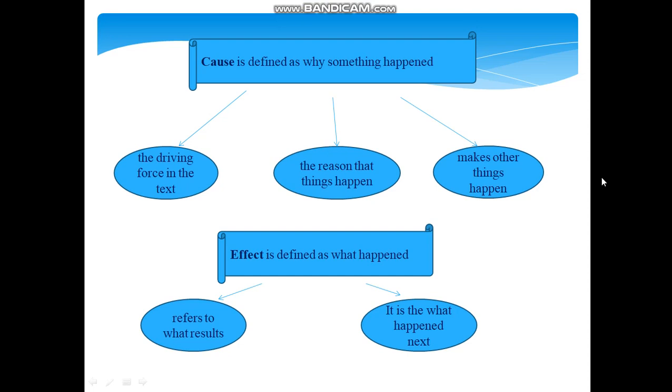Effect is defined as What happened. Cause is defined as Why something happened. Clear words and signals for causal relationships include such as Because, So, Consequently, Therefore, Thus and Since.